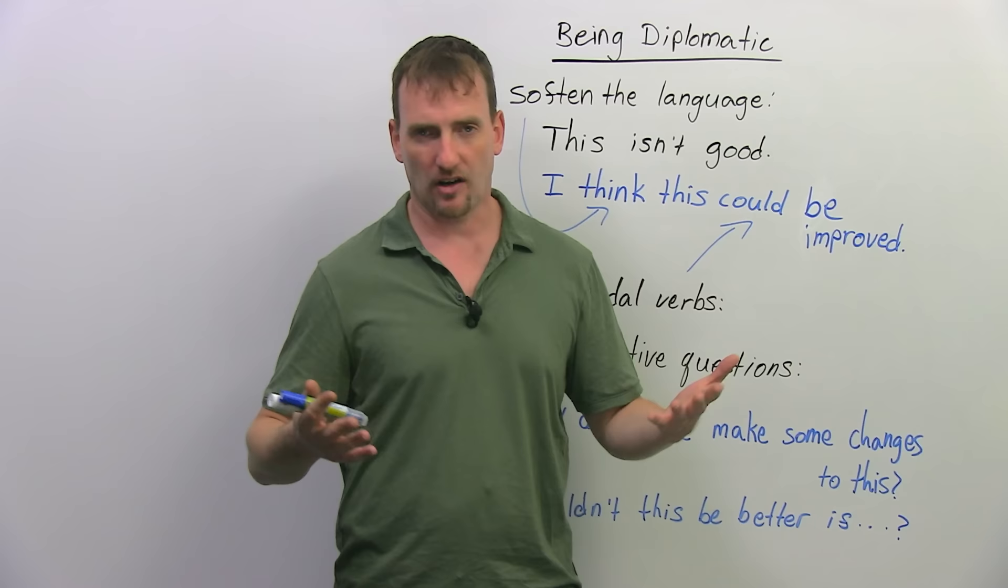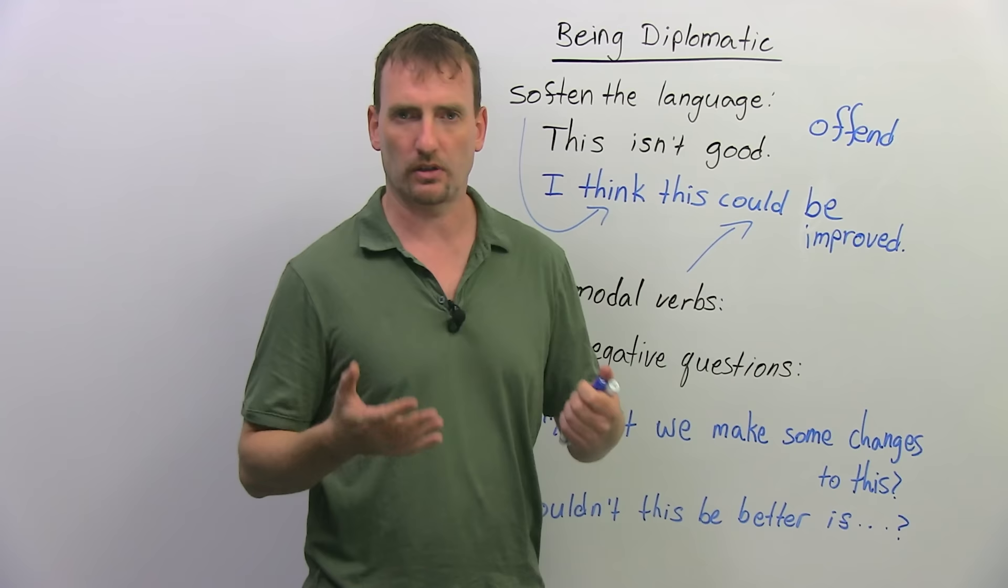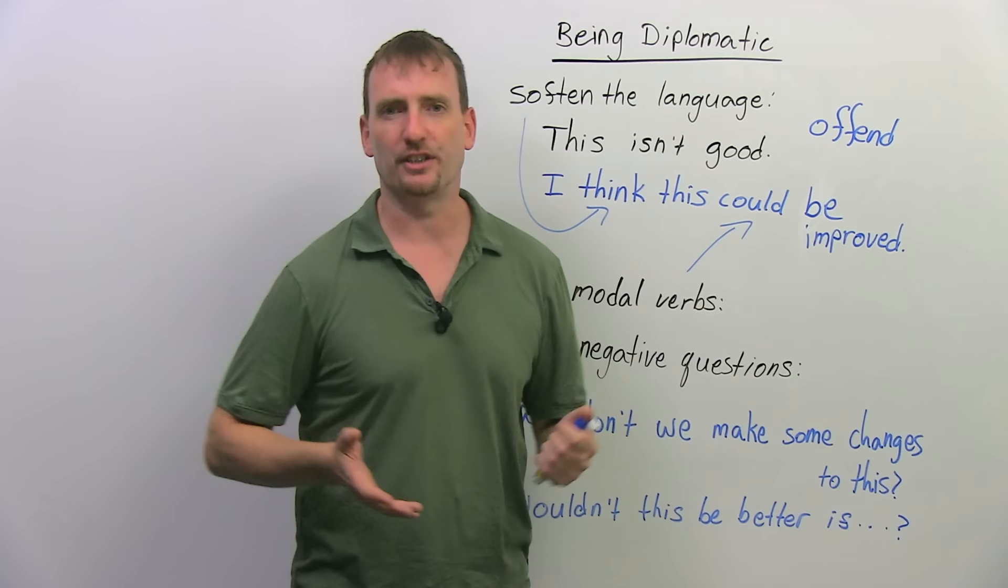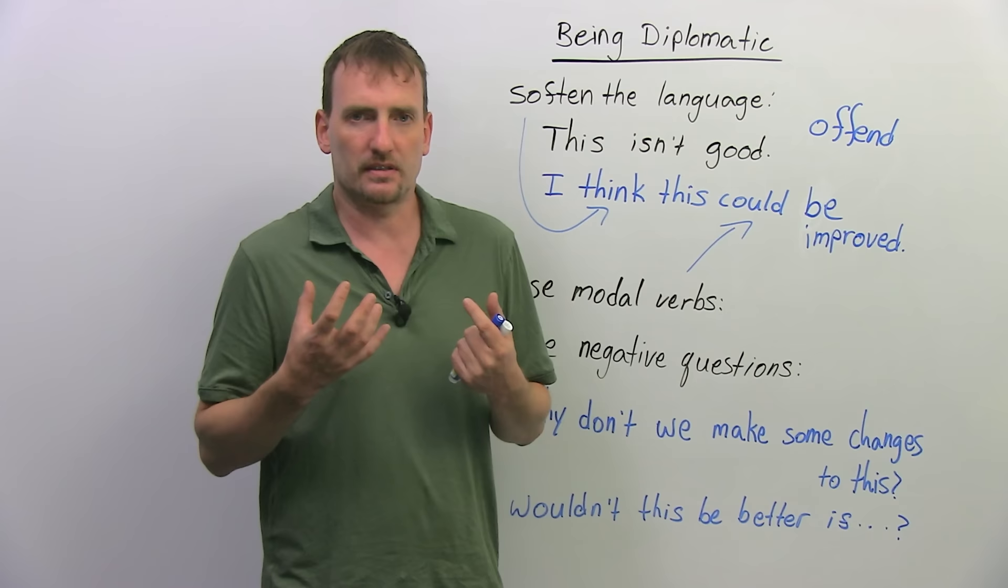You want to be diplomatic so that you don't offend anyone. It's very easy to offend people and a lot of this has to do with cultural norms or things that are normal in one culture might not be so normal in another culture.